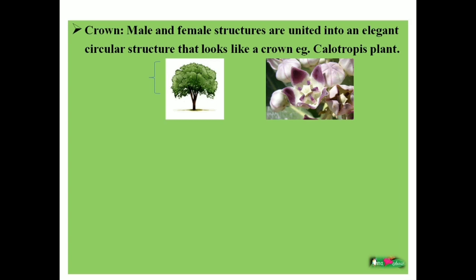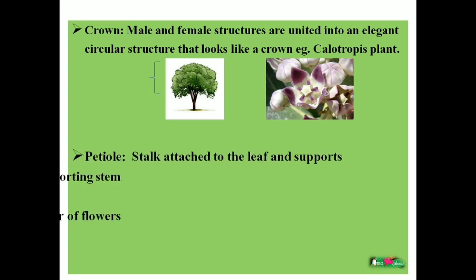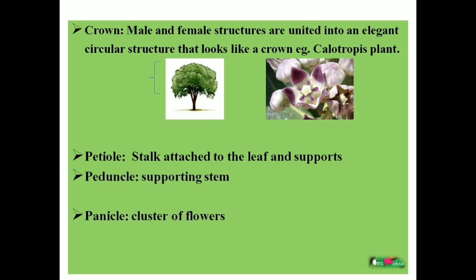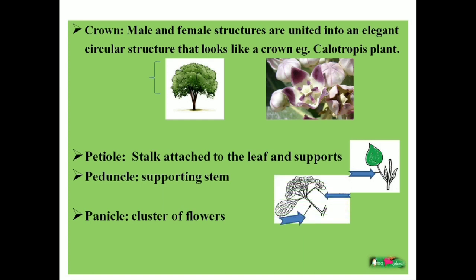The next term is petiole — the stalk attached to the leaf and provides support, as shown in the picture. And the peduncle is the supporting stem to the inflorescence — the stem that supports the inflorescence is called the peduncle. The stalk attached to the leaf is called the petiole.